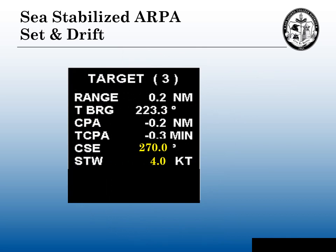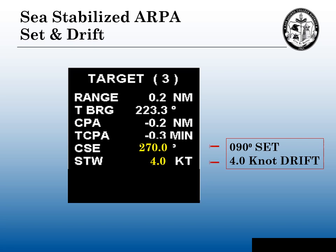This is how we assess or estimate the set and drift of the current on an ARPA. If you look at your radar readout on your ARPA, it'll give the range, the bearing, the closest point of approach, and the time of closest point of approach. For the course, it's going to say 270 — that's the direction of that vector — and the speed is going to be four knots. So the set is going to be 180 degrees out from that number, meaning the set is 090 degrees and the drift of the current is four knots.